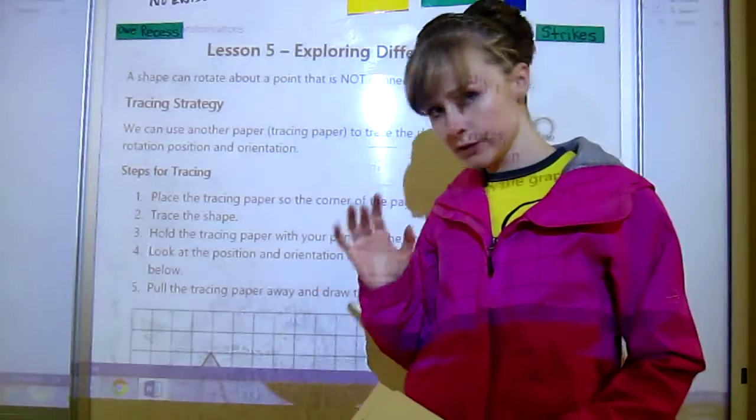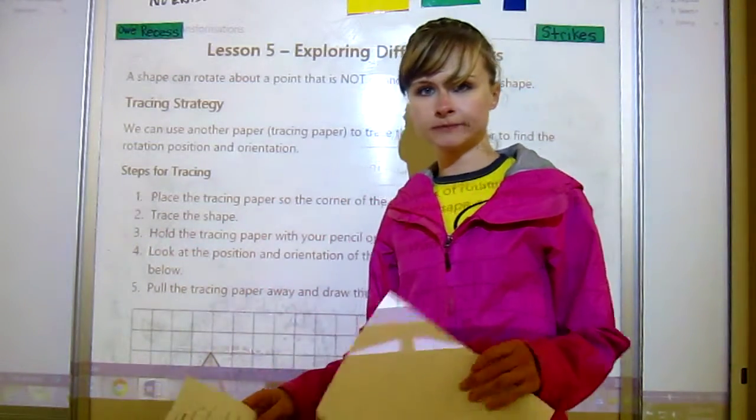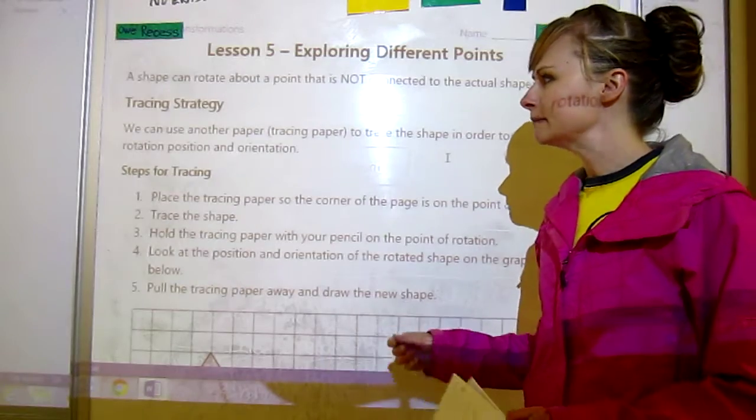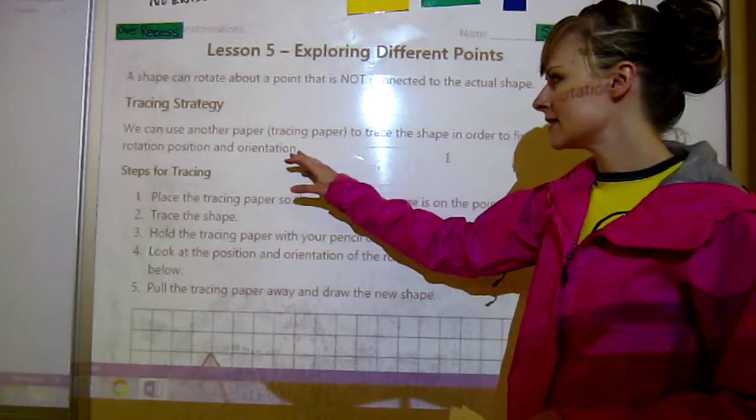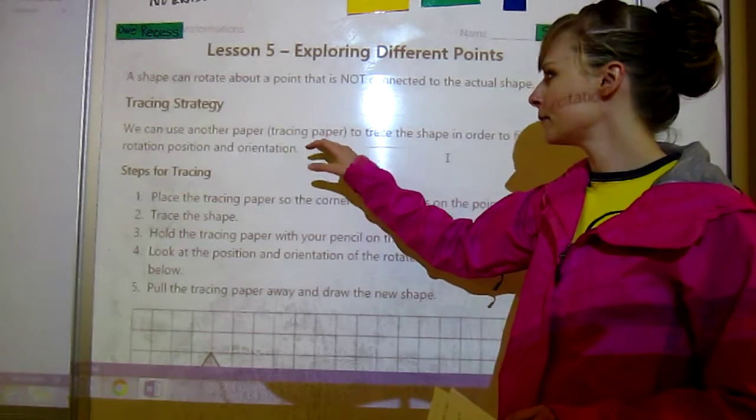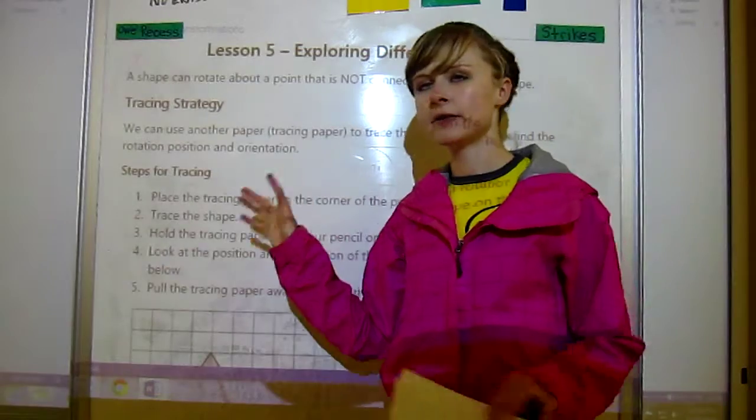There's one strategy where we trace. I don't really have tracing paper, but we'll just use white paper and you can see through it if it's light enough. What you need to do is use another paper to trace the shape in order to find the rotation position and orientation.